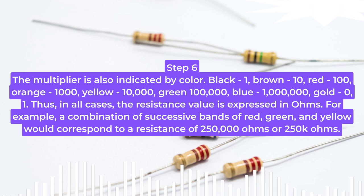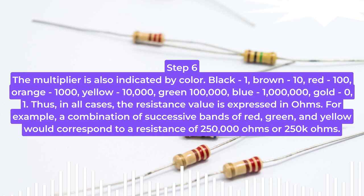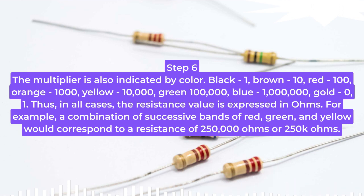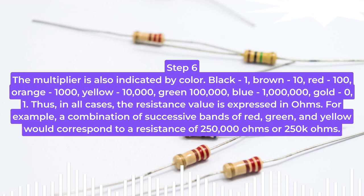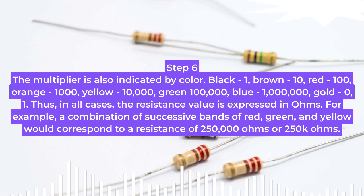Step 6: The multiplier is also indicated by color. Black = 1, brown = 10, red = 100, orange = 1,000, yellow = 10,000, green = 100,000, blue = 1,000,000, gold = 0.1. In all cases, the resistance value is expressed in ohms. For example, a combination of successive bands of red, green, and yellow would correspond to a resistance of 250,000 ohms or 250 kΩ.